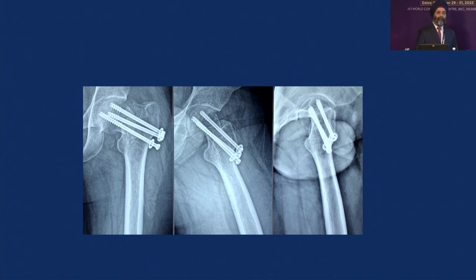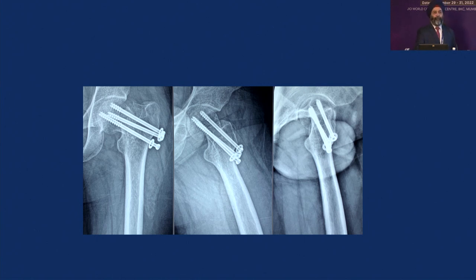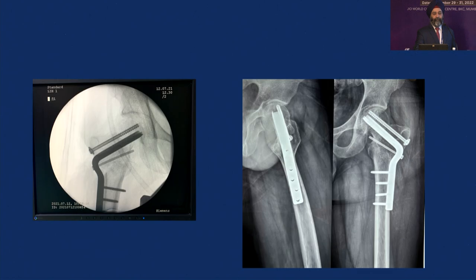Is it a surgeon failure or is it a non-union? Do we need a bone graft here? He is a young patient, software engineer, 24 years old. The biomechanics are not there. So I went ahead, corrected the biomechanics, no bone graft, and the fracture went on to unite. He is walking around, he can squat and work on his laptop.